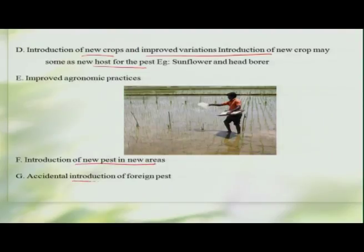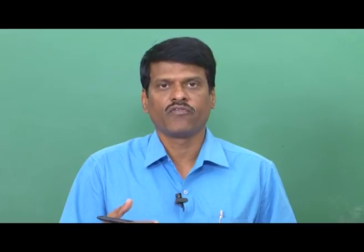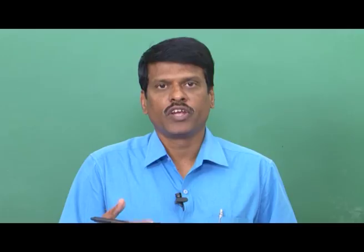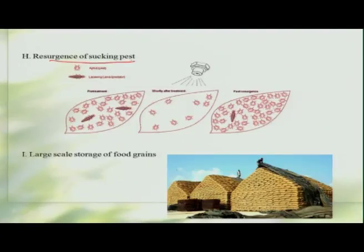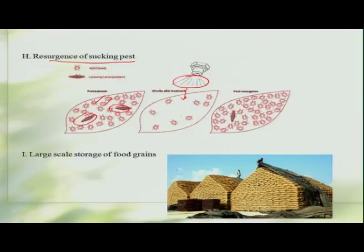The introduction of new pests into new areas, such as foreign pests accidentally introduced, is a very classic example. When insects not originally in an area are accidentally introduced, they find a favorable environment with no natural enemies, giving a boost to their multiplication and making them serious pests. Resurgence of pests — particularly sucking pests — is another reason. Schematically, when a pesticide spray kills all natural enemies while leaving some pests, the absence of natural enemies allows the pest population to multiply and become quite serious. Finally, storage of large quantities of grains also provides a good opportunity for insects to colonize, multiply, and become pestiferous.